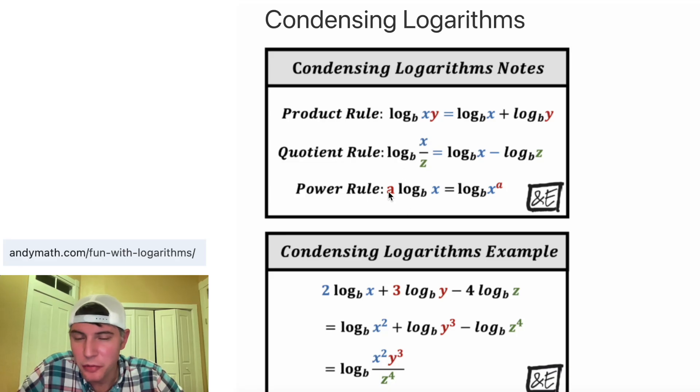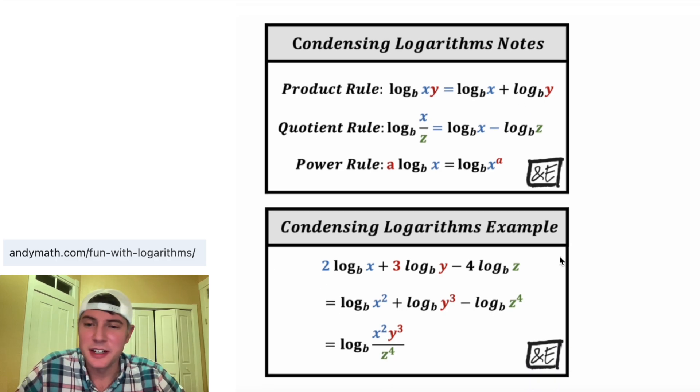And then for the power rule, this coefficient of the log can be brought up and become the exponent of the x, the exponent of the thing being inputted into the log. So these are pretty important properties. And here's an example of how they're used in condensing logarithms. It starts with 2 log base b of x plus 3 log base b of y minus 4 log base b of z.